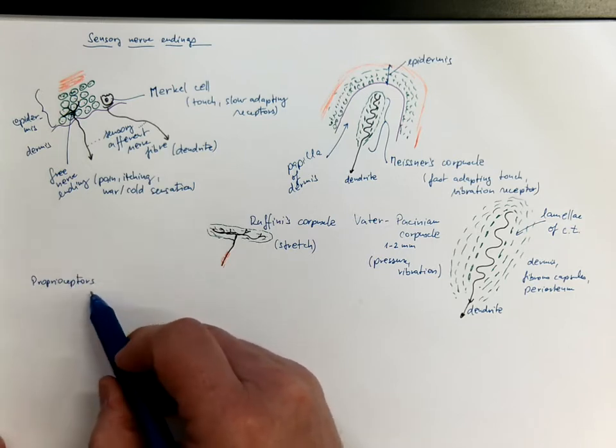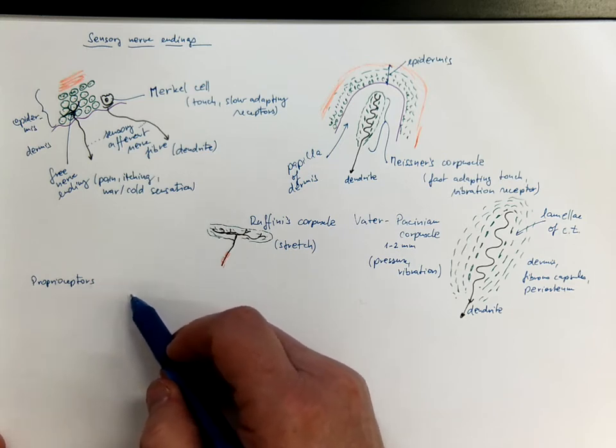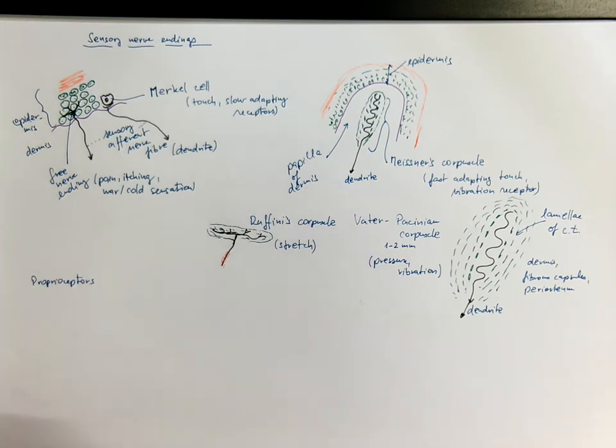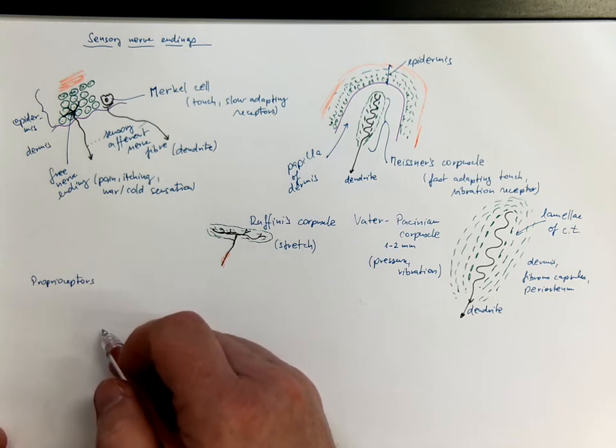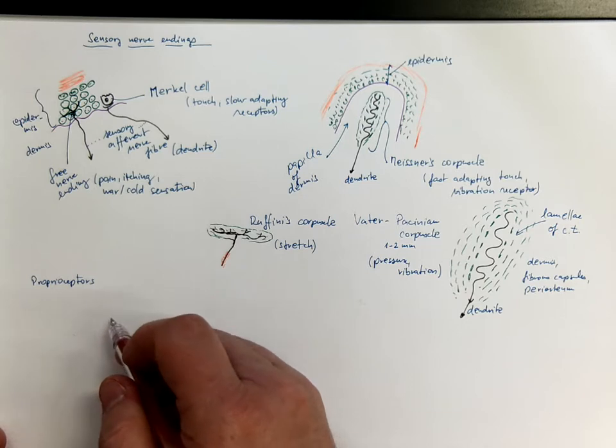Proprioceptors are sensory endings or bodies that report the condition of the locomotor apparatus, such as bones, tendons, muscles, and articular capsules to the CNS.